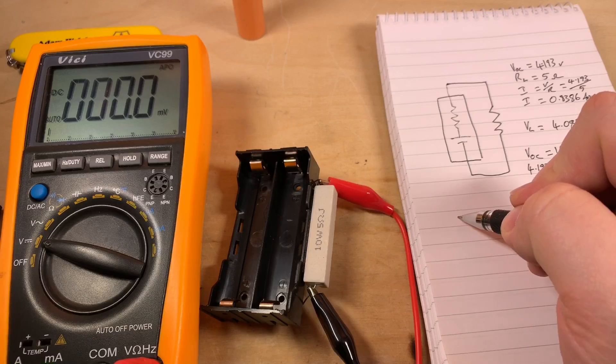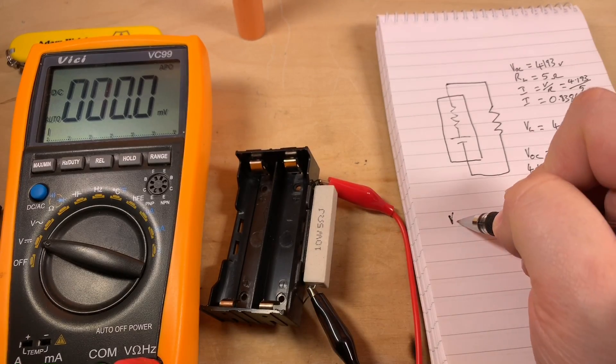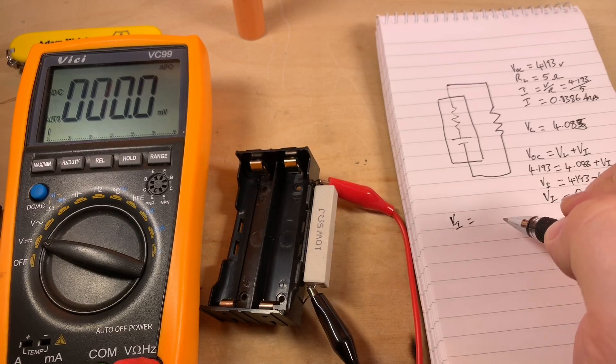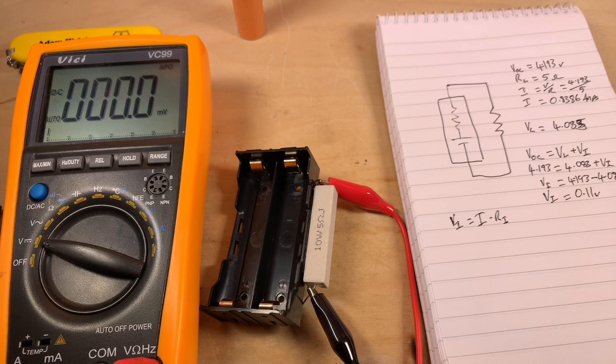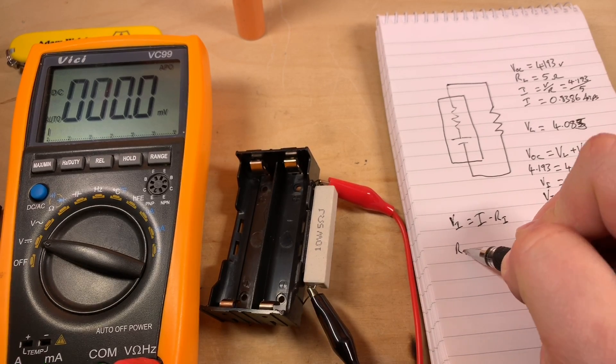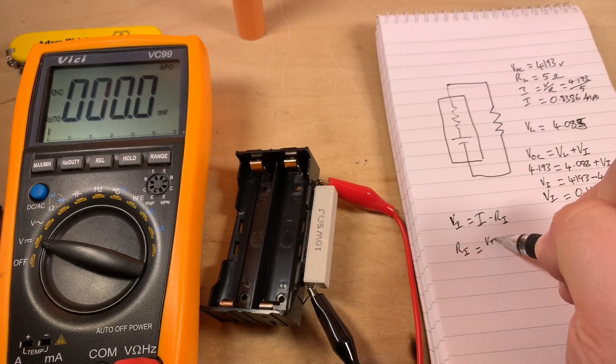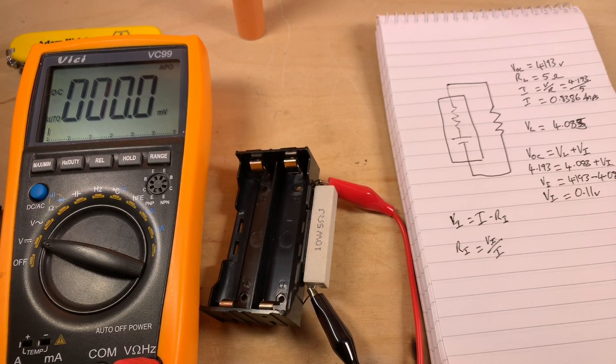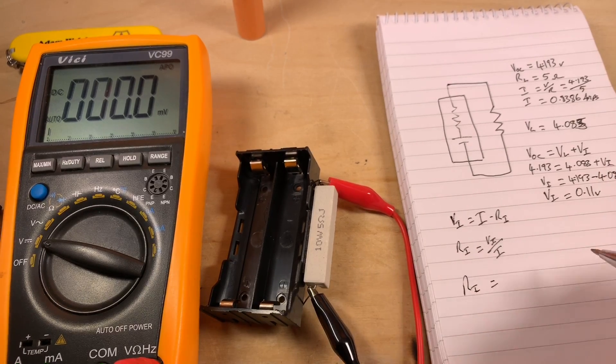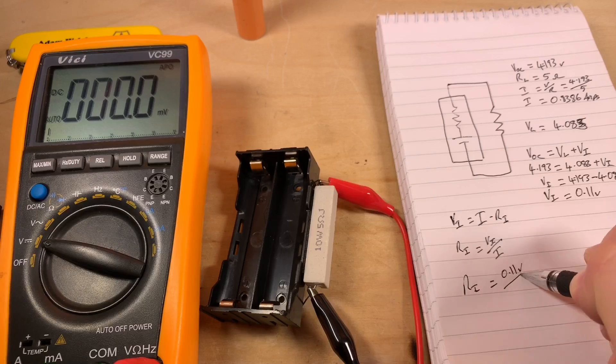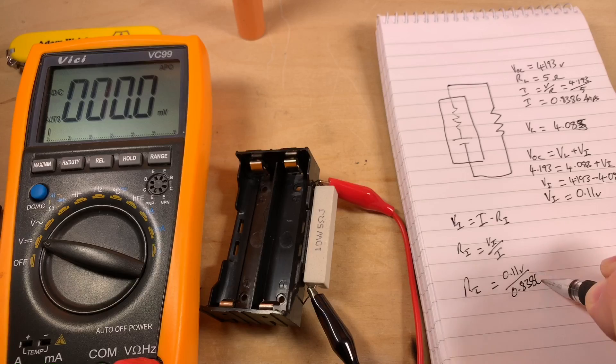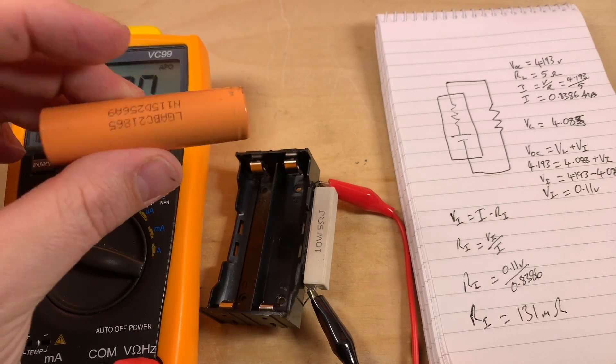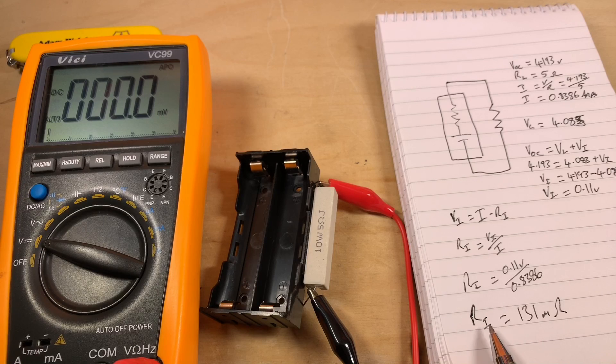Now we can just apply Ohm's law again, so the voltage across that internal resistor equals the current times the resistance of the internal resistor, V equals IR. So RI equals VI over I. So RI equals 0.11 volts divided by 0.8386 amps. And that gives me the grand total that this cell has an internal resistance of 131 milliohms.